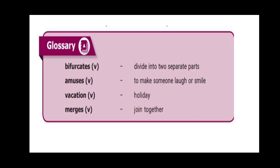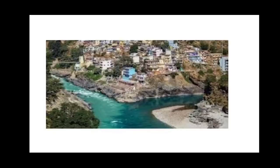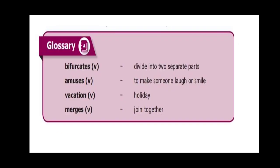See the glossary. Bifurcates means divided into two separate parts — it may be a road or river divided into two parts. Amuses means to make someone laugh or smile, i.e., to entertain. Vacation means holiday. Mergers means join together.